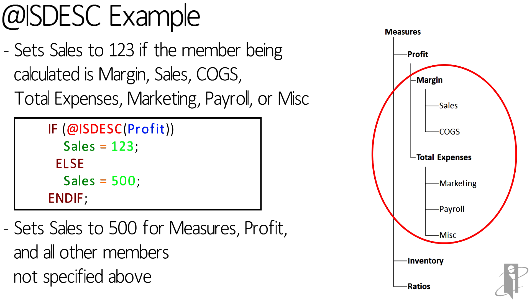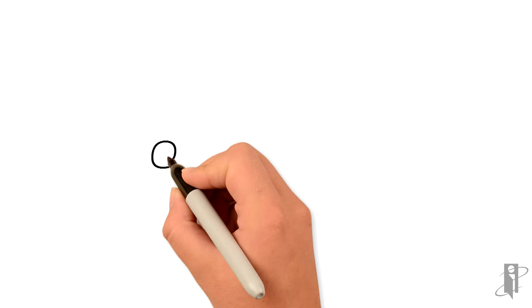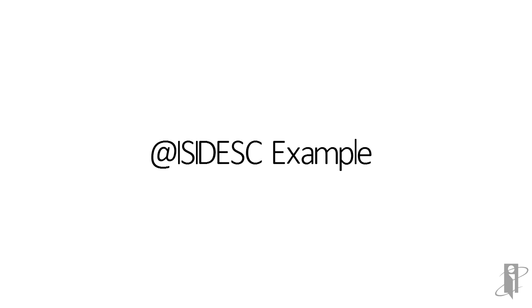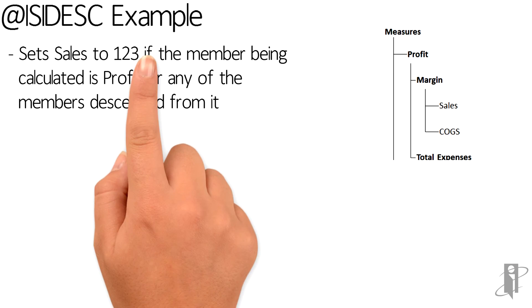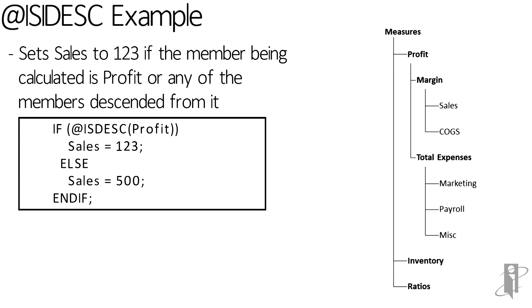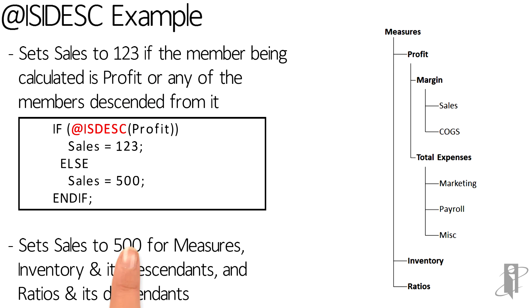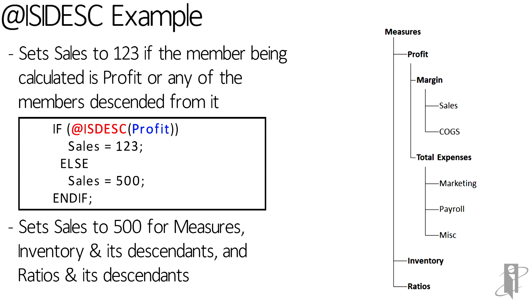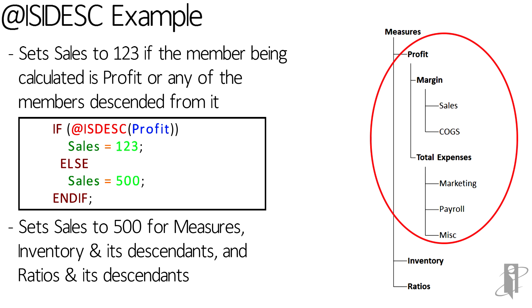But what if I wanted to include the profit member itself? In that case I would use IS IDESC profit. Now it will include not only the members beneath profit, but also the profit member itself.